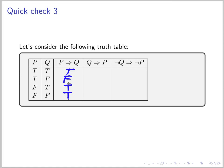Now Q implies P: if Q is true and P is true, then this is true. If Q is false, then these two cases are vacuously true. And if Q is true and P is false, then this is false. You can see that P implies Q is not equivalent to Q implies P. As we said before, this is the converse. So the implication and its converse are not necessarily equivalent.